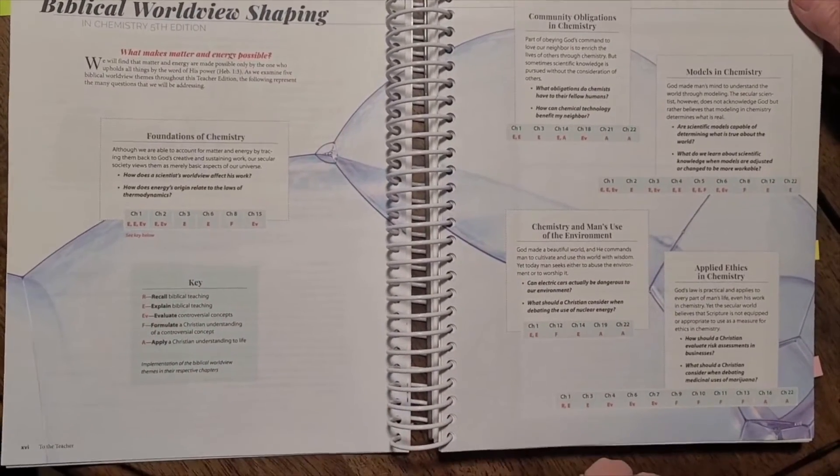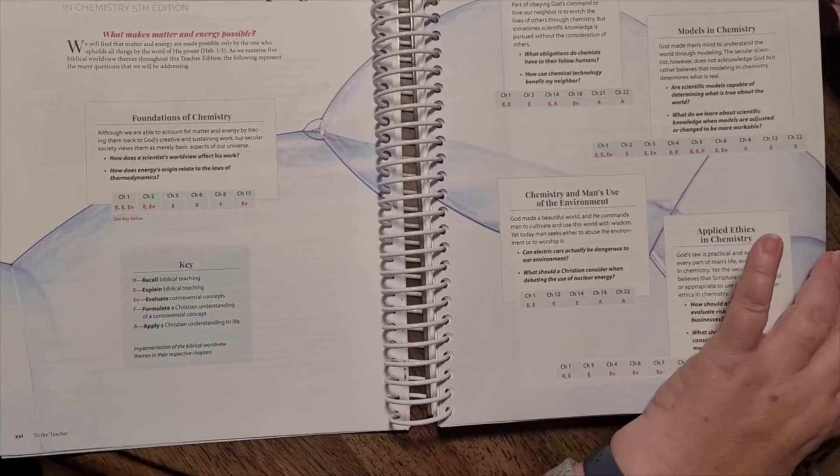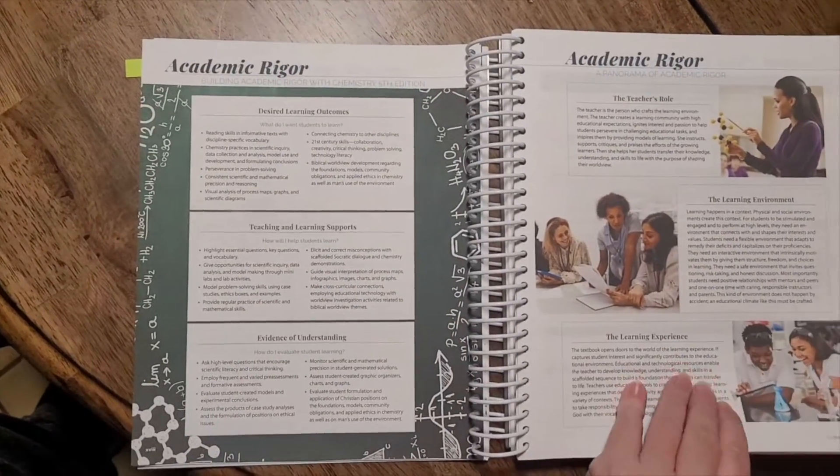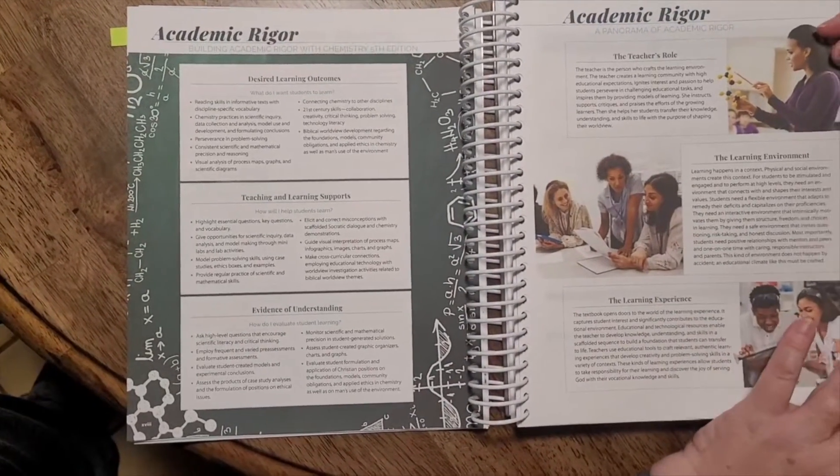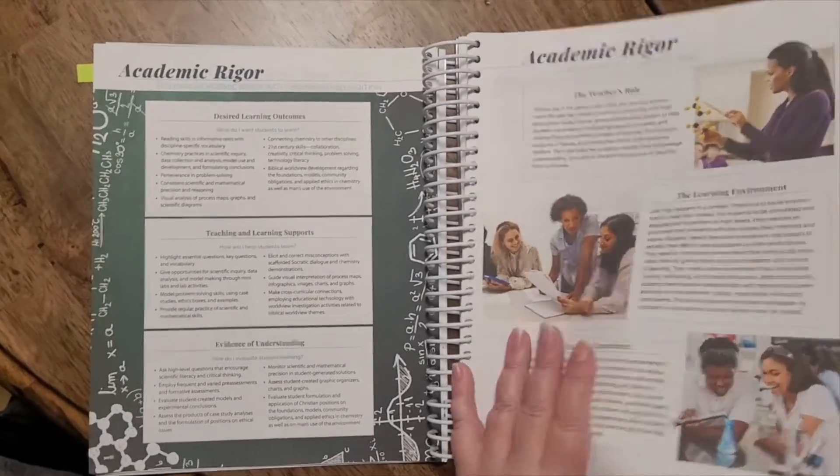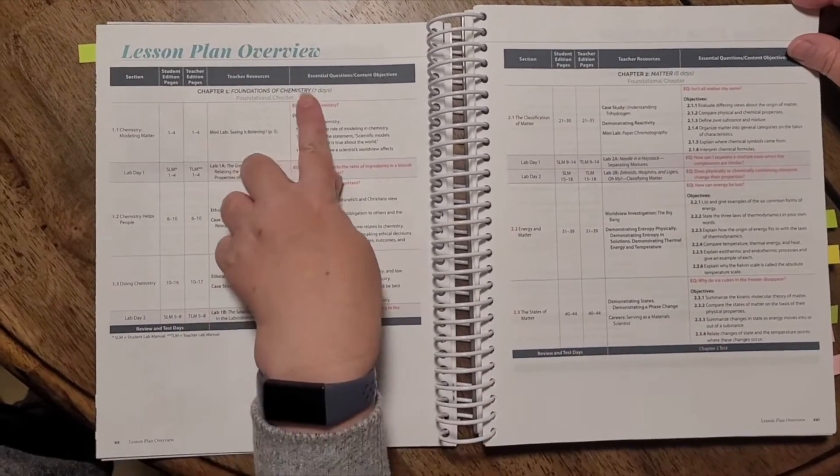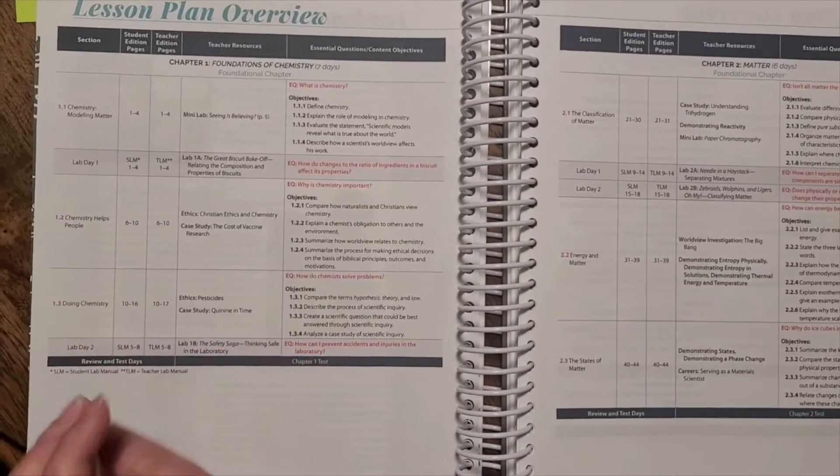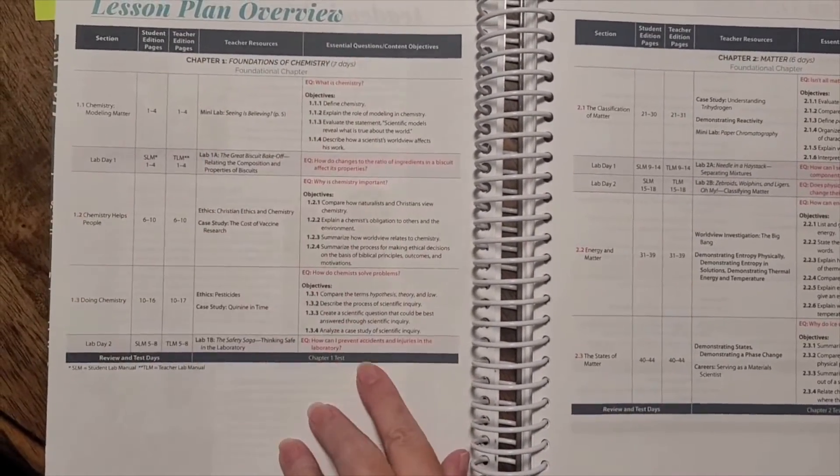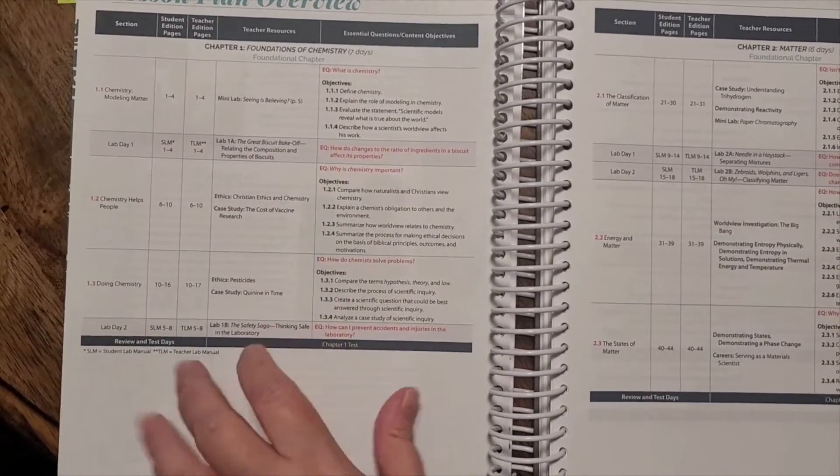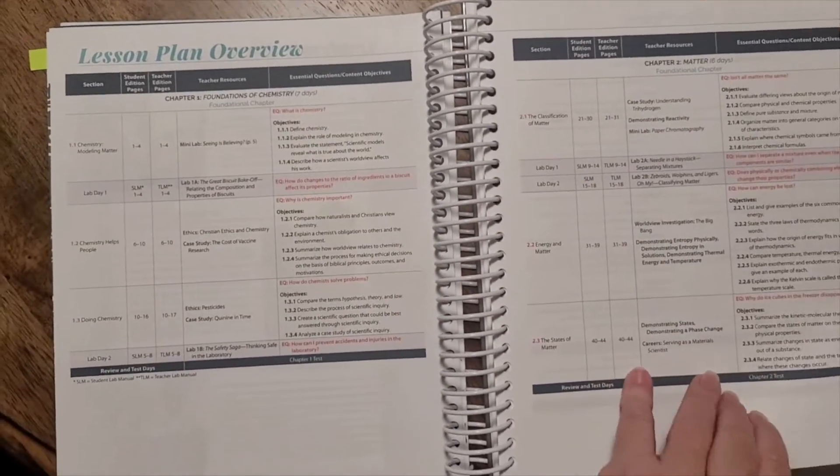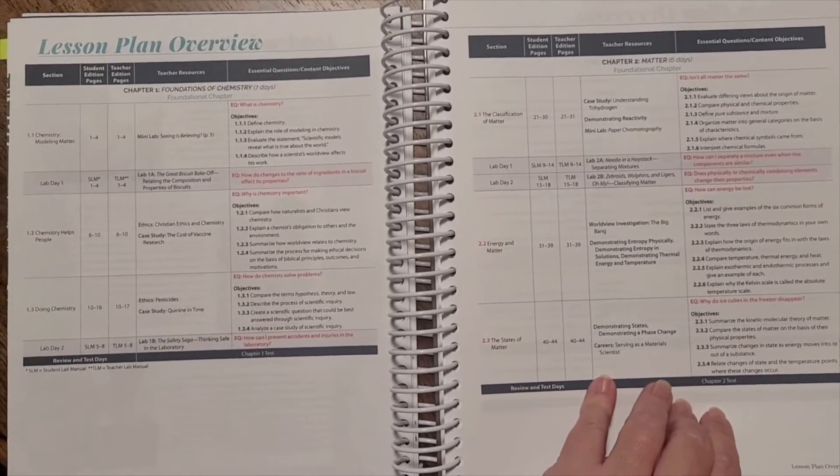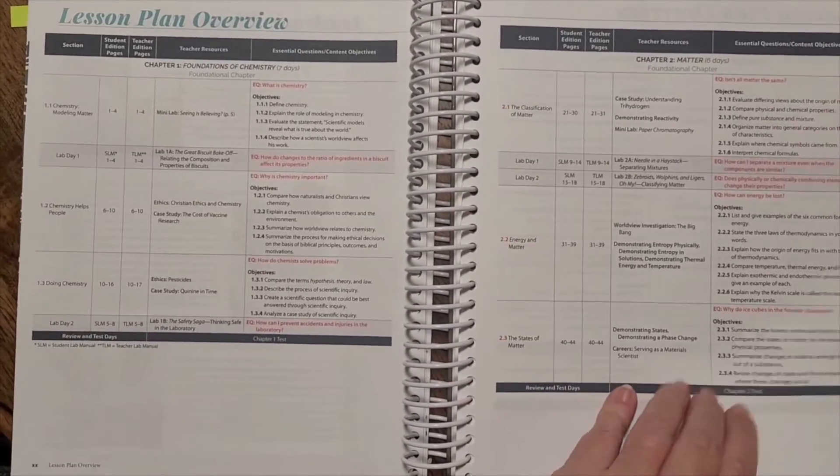It talks about how chemistry can be looked at from a biblical worldview. And there's different facets here. And the key here tells you what type of biblical teaching. Is it evaluation? Is it explaining? Is it recalling? Then these pages talk about the academic rigor of this course and the things that will help you with the academic rigor. And then we come to the lesson plan overview. You'll notice here, it says the number of days that this chapter should take. And you'll notice that there's lab days listed. If you want a breakdown of day by day, the homeschool hub will also have detailed lesson plans that are day by day that you can use to help you with that.